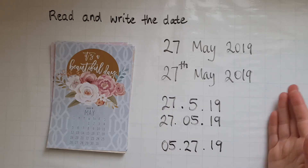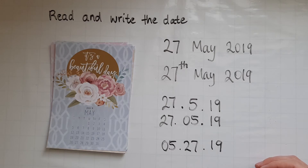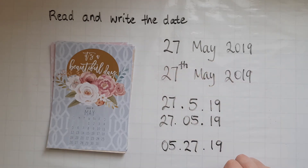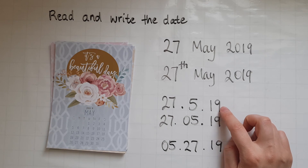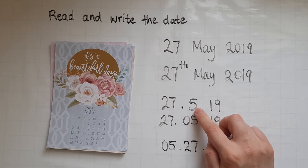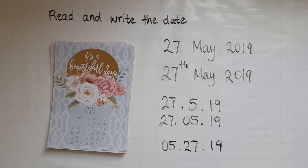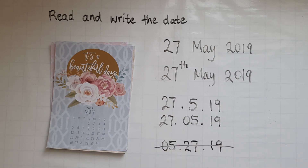These are just some common ways of writing the date, and the way we'd read them is '27th of May 2019.' The format 27th of the 5th 2019 means 2019 and May. I would not encourage you to use the last format — just be aware that it exists, as it is the American format of writing the date.